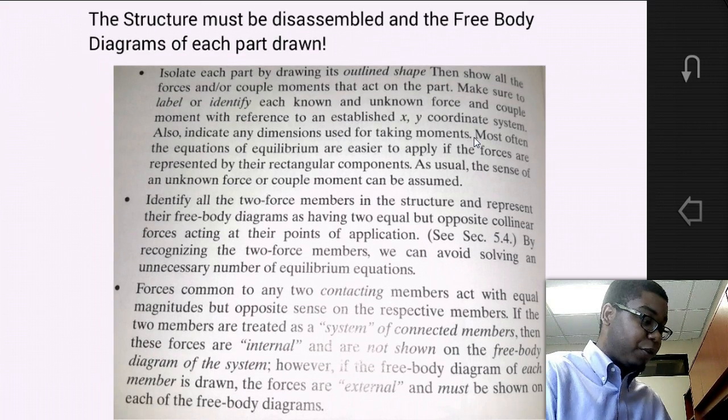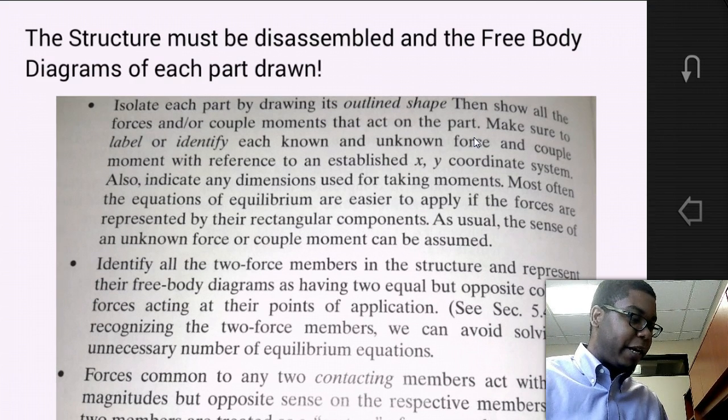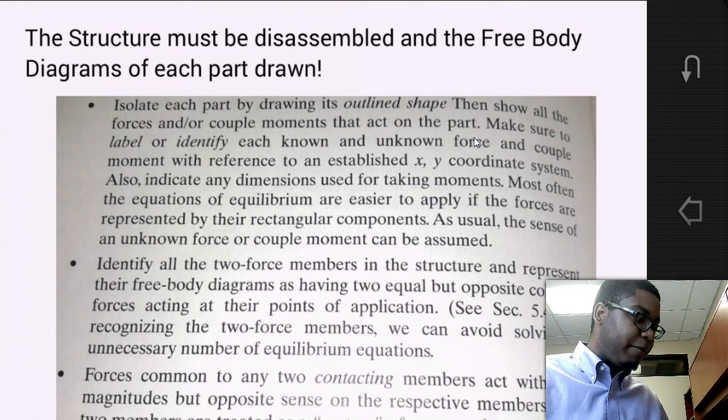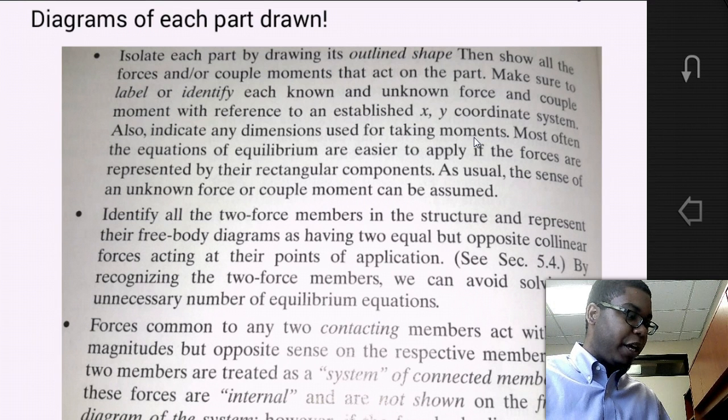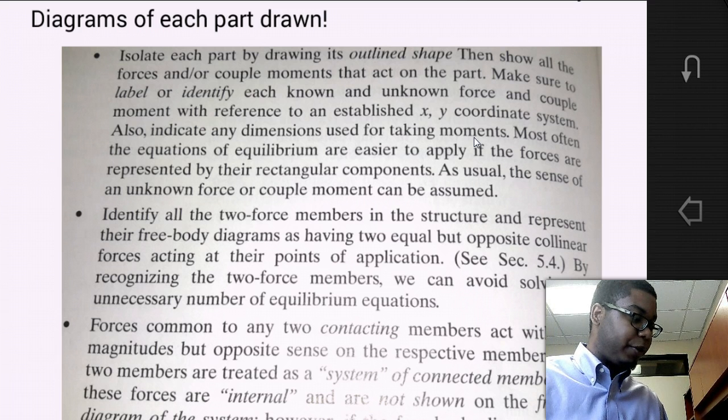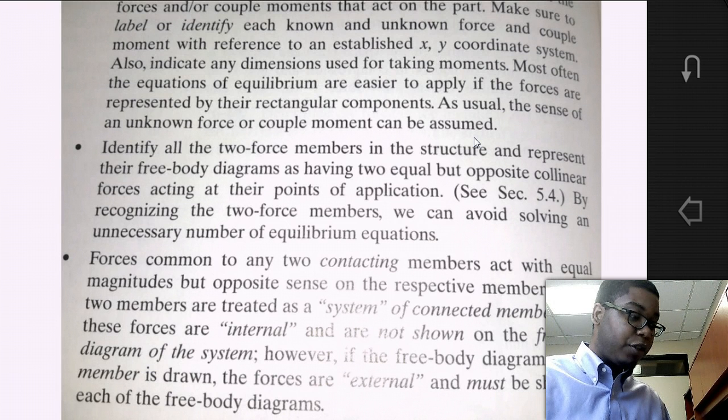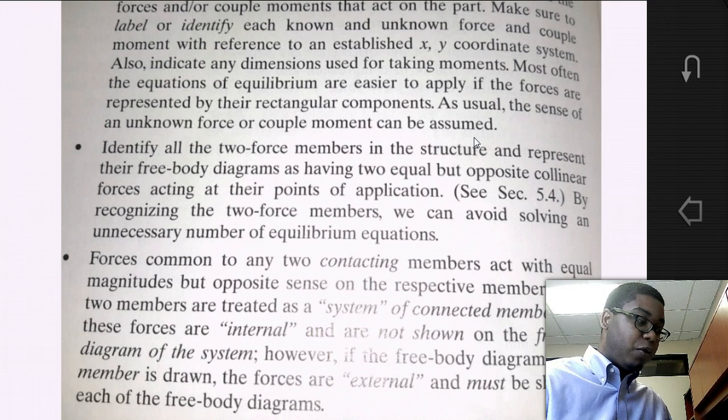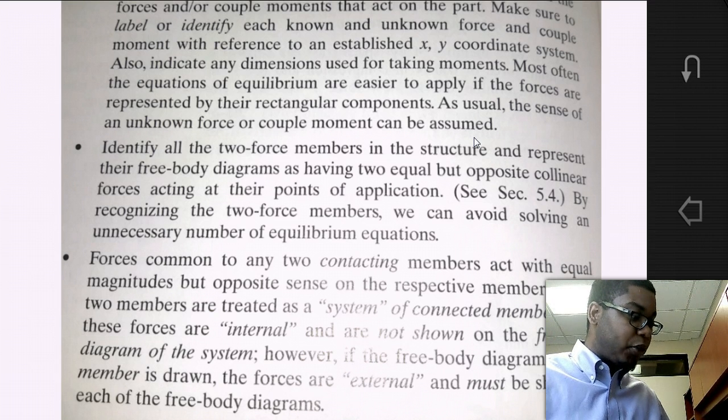The steps to creating such a free body diagram is isolate each part by drawing its outline, then show all the forces and or couple moments that act on the part. Make sure to label and identify each known and unknown force and coupled moment with reference to your right hand coordinate system. Also, indicate any dimensions used for taking the moments. So, indicate what is your positive sense of your moment.